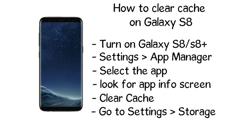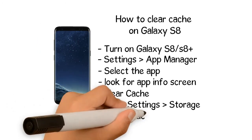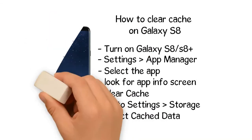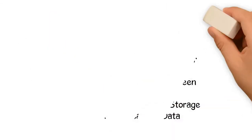Step 6: To clear the app cache for all apps, go to Settings, Storage. Step 7: Select cached data to clear all app caches simultaneously. Don't select clear data unless you want to lose all the information that app stores, like your username, passwords, game progress, preferences, settings, and so on.